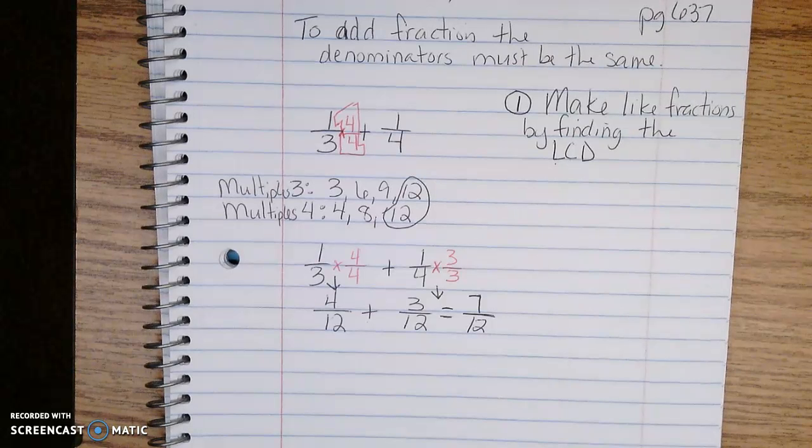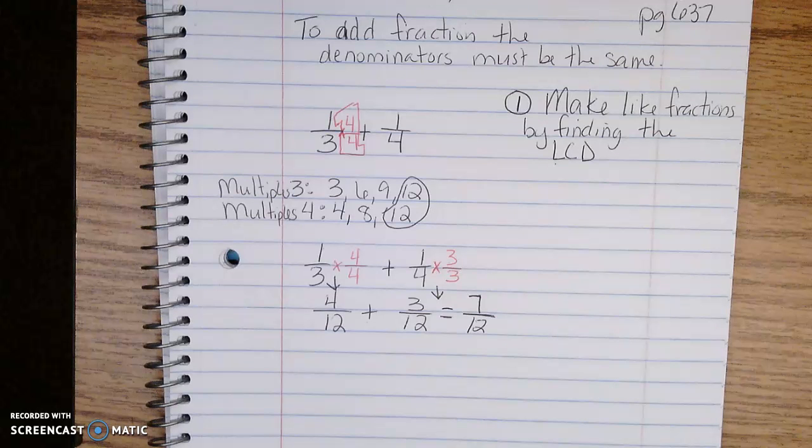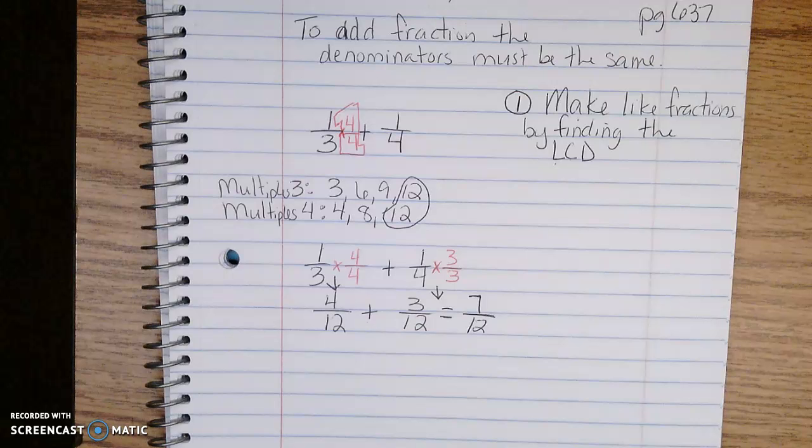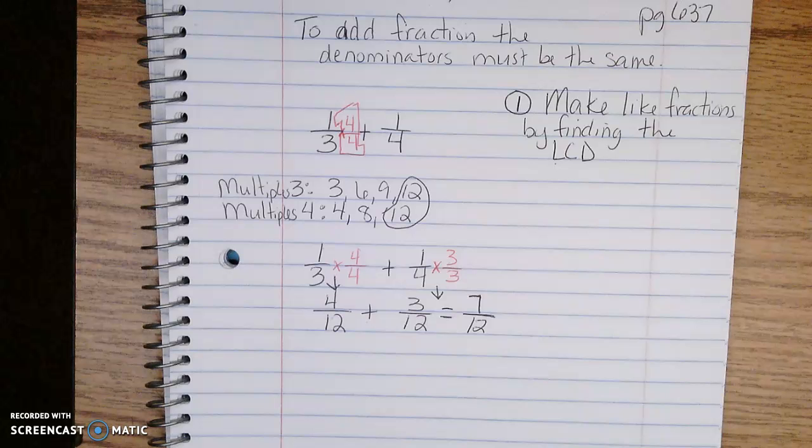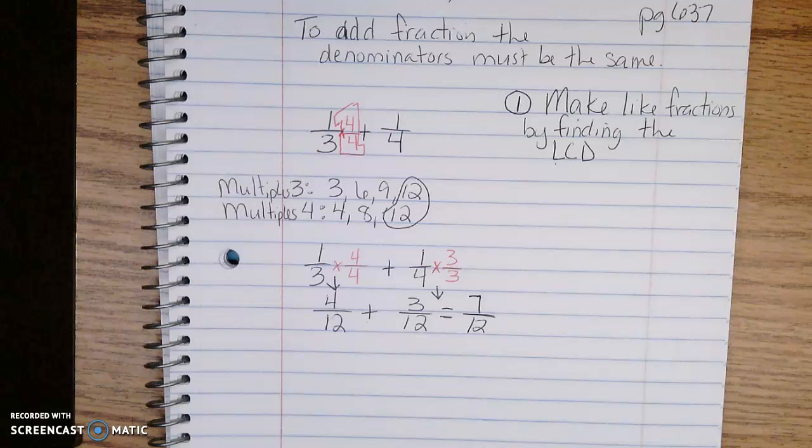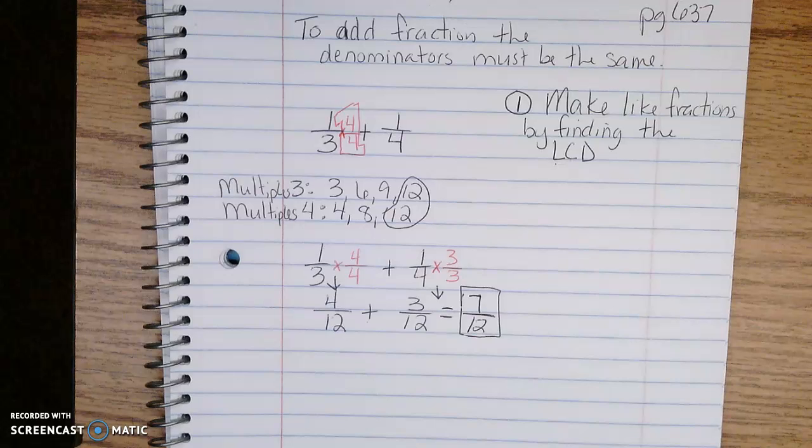Now I have to look at 7/12 and decide whether it needs to be simplified or if it is already simplified. I have to think about my fraction of 7 and 12 and think, do 7 and 12 have any common factors? The only way to make 7 is 7 times 1 because it's prime. To make 12 is 1 times 12, 2 times 6, 3 times 4. There's no 7 in there, which tells me this is my simplified fraction, my answer.